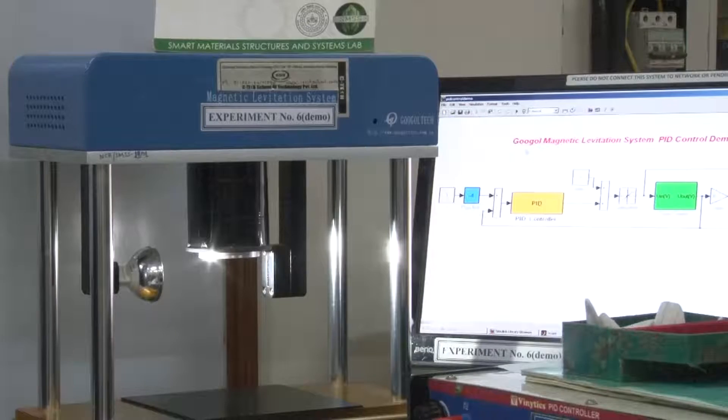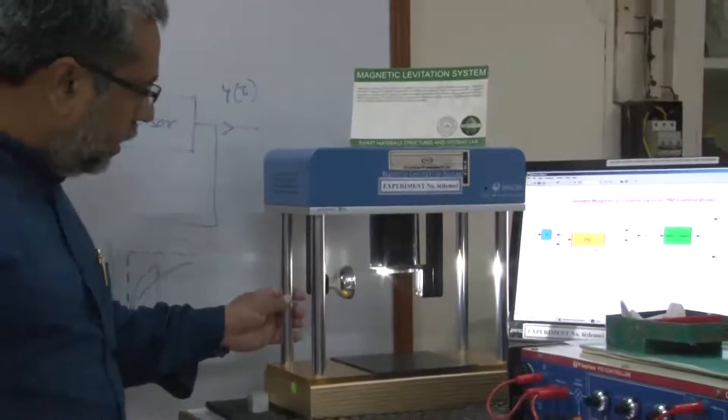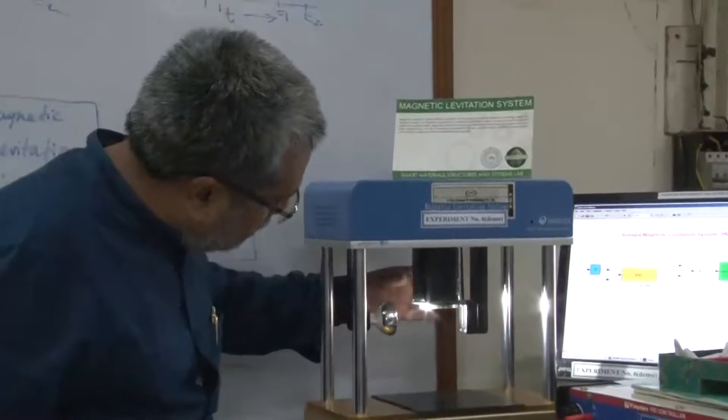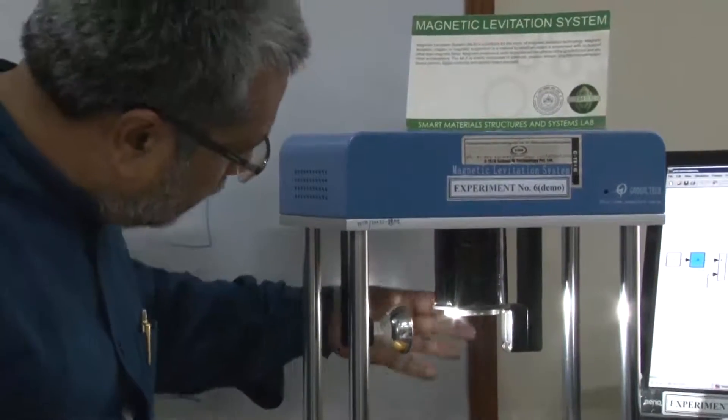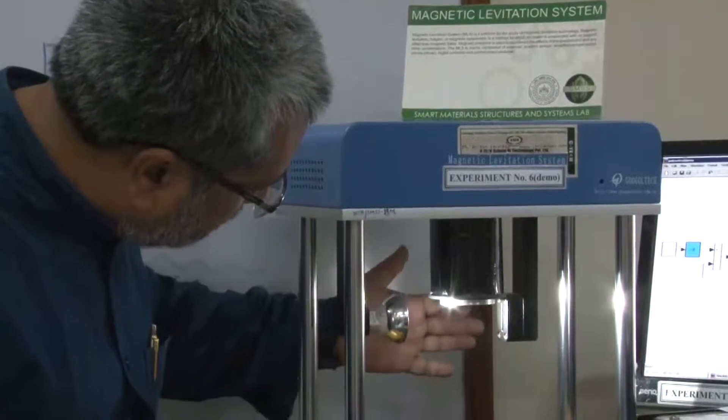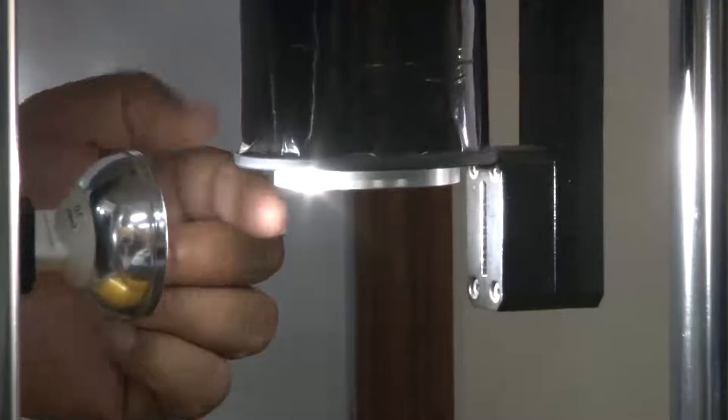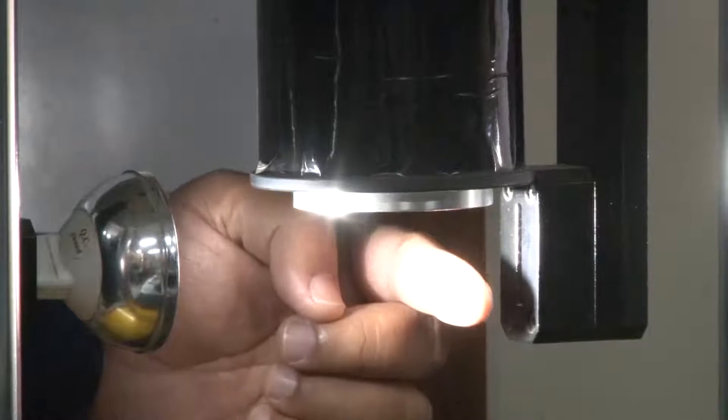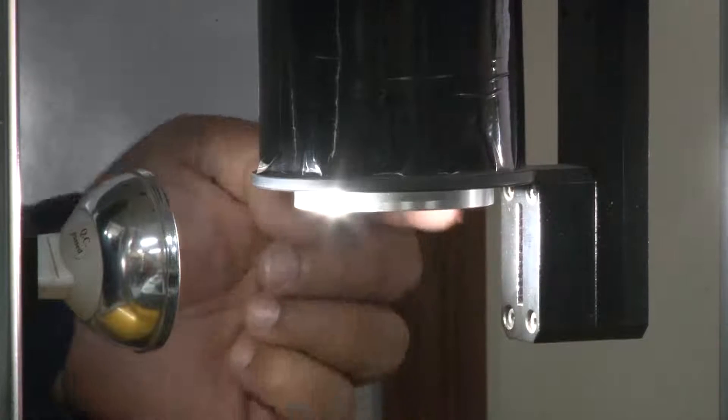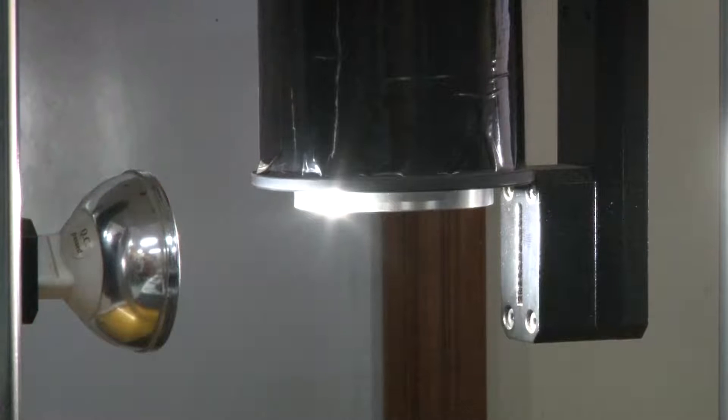What we have here is a magnetic levitation system. In this system, this one is an electromagnet whose power can be controlled, and there is a sensor here. The sensing system is such that there is a light which is coming from this point and the shadow of this light is getting generated here. Depending on the shadow, the electrical signal is generated and that actually controls the magnetic field. So that is the whole closed loop control system.